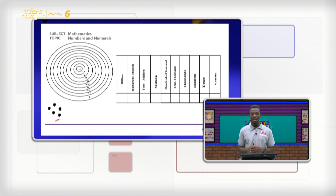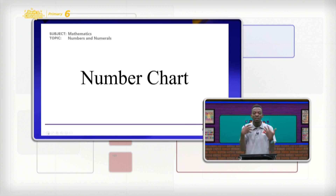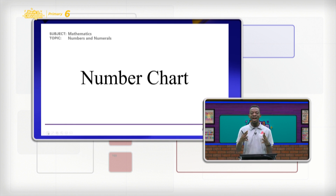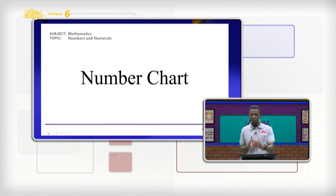For today, we are going to concentrate on using what we call the number chart to read out, mention, and identify some numbers. The number chart is a kind of table or grid that contains ordered numbers — it is a skip counting of some numbers.